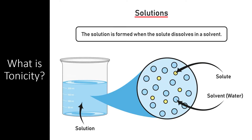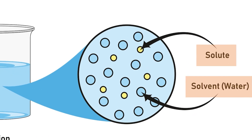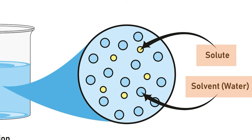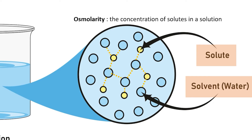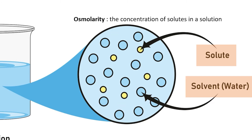A solution is formed when a solute — such as an ion, a polar molecule, or another substance — dissolves into a solvent, a liquid capable of separating solute molecules. In living systems, the solvent is always water. The solute dissolved in water can be anything from small, charged ions to large, polar glucose molecules. Hydrogen bonding constantly separates these molecules and tries to distribute them evenly as each water molecule tries to maximize its number of hydrogen bonds. Osmolarity is a term used to describe the concentration of solutes within a given volume of water. A high osmolarity means there are many solutes dissolved in a solution, whereas a low osmolarity describes a solution with few solutes.